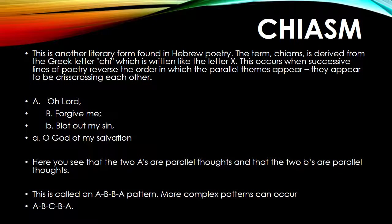Another literary form found in Hebrew poetry is chiasm. The term chiasm is derived from the Greek letter chi, which is written like the letter X. This occurs when successive lines of poetry reverse the order in which the parallel themes appear — they appear to be crisscrossing each other. For example: A — 'O Lord,' B — 'forgive me,' then a repeated B — 'blot out my sin,' and A — 'O God of my salvation.' The two A's are parallel thoughts and the two B's are parallel thoughts. This is called an ABBA pattern.